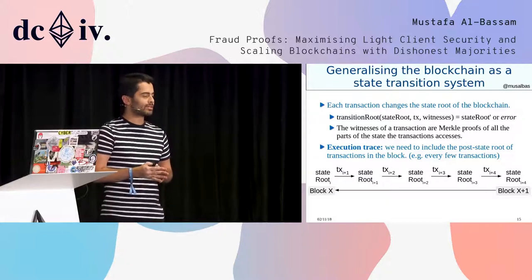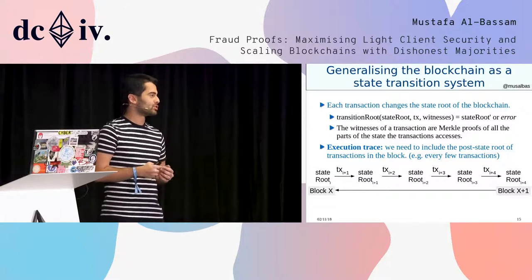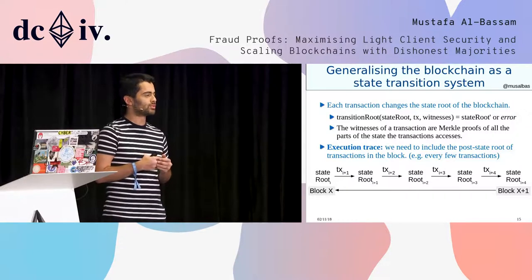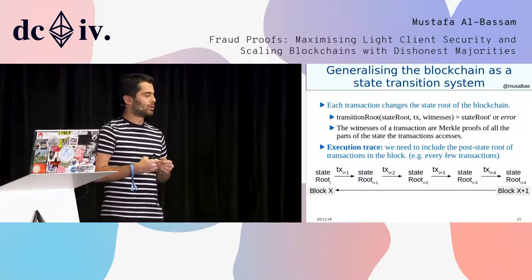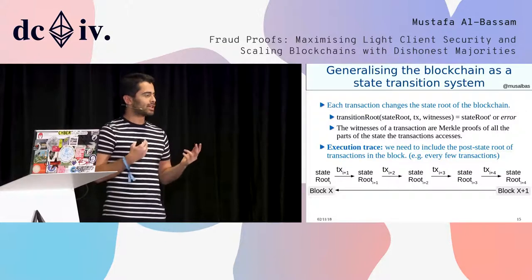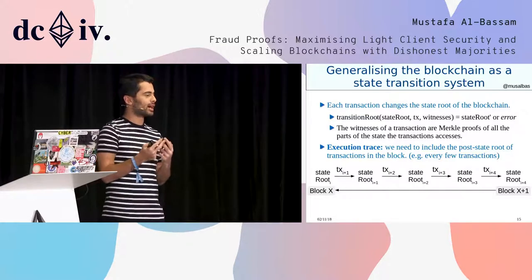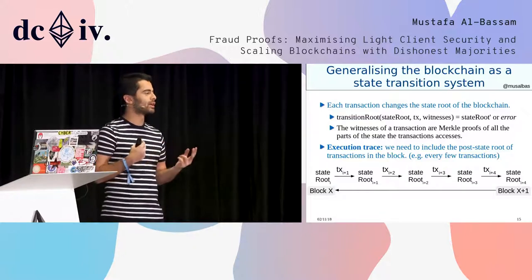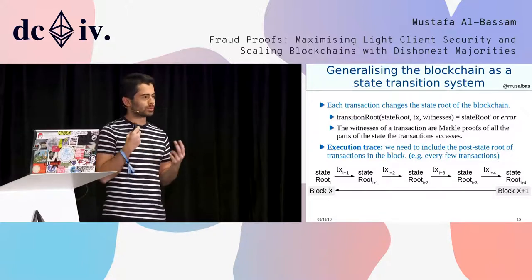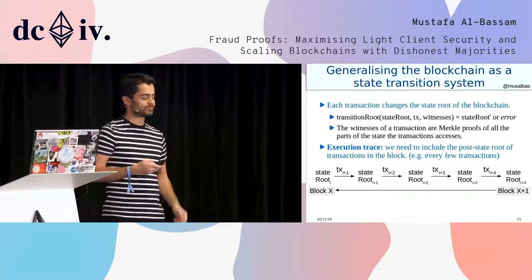You can not just include the final state root in the block header; you can also include the intermediate state roots. For example, after every single transaction you could include the new 32-byte state root, or you could do it after every few transactions. It's basically a trade-off between how big the fraud proof is and how much extra on-chain data you want to put on the chain.